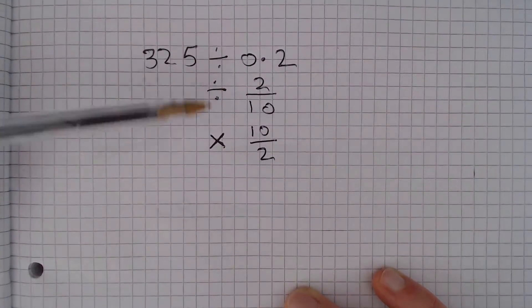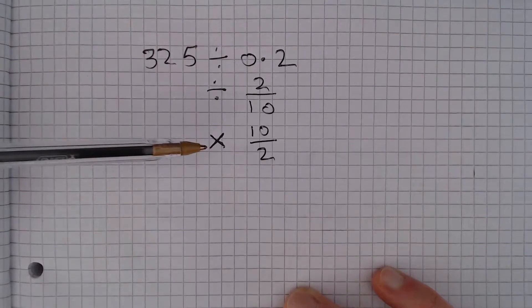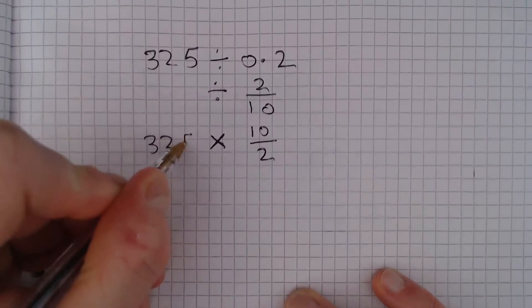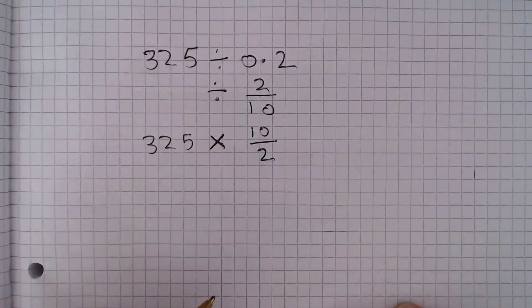So dividing by 2 tenths is the same as multiplying by 10 over 2. So the calculation we actually need to do is 325 multiplied by 10 divided by 2.